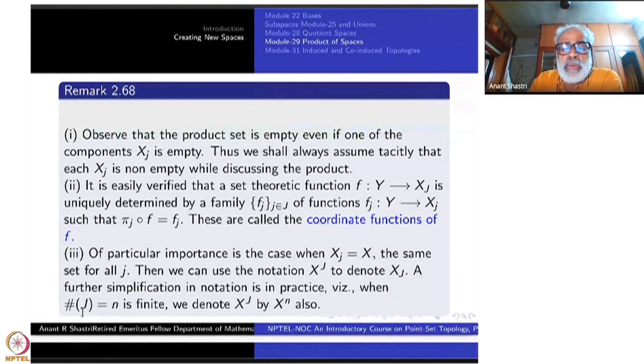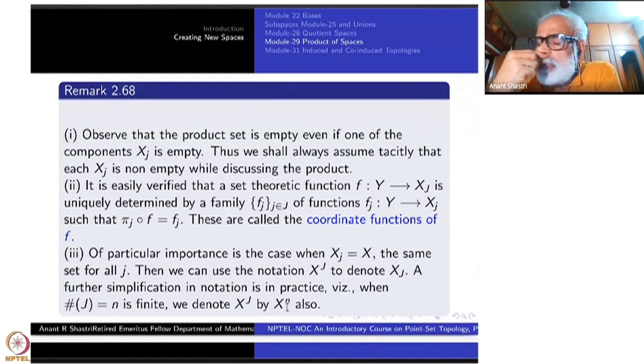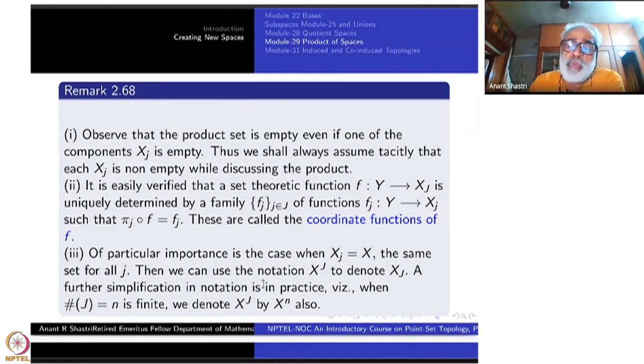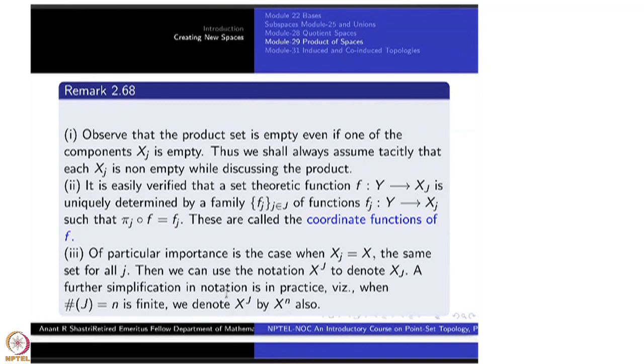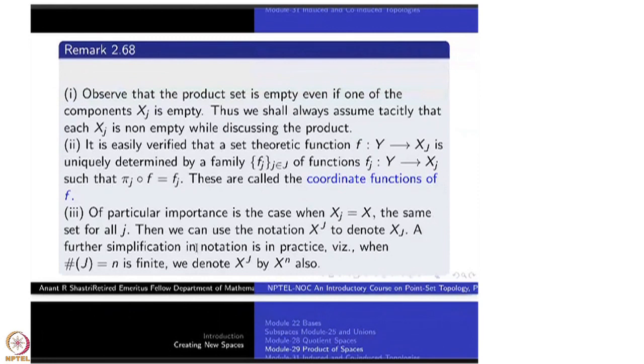A further simplification in notation in this practice: When cardinality of J is n, instead of writing X power J, you can write X power n. Just like we do for R, C, K and so on. K power n. So that will also remain. What is this n? It is a set with n elements. Strictly speaking, the natural number n with the class. How many elements are there in that set? Every integer is a set. How many elements are there? So that is why this notation is also valid. This is all quite logical. No problem there.